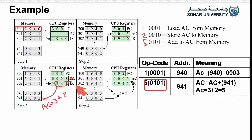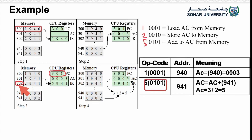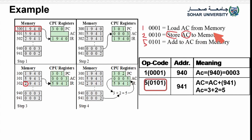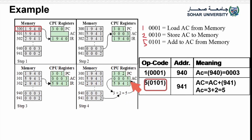At address 400 and using address 941 (value 2), that value is added to the accumulator (value 3). This is step 3. After finishing, the PC moves to address 302. Address 302 has operation code 2, which is STORE — store the value from the accumulator register back to memory. The result 3 + 2 = 5 is stored.